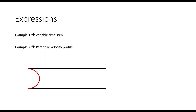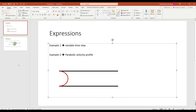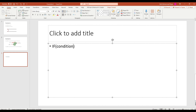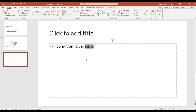Let's start with example one — the variable time step. It is a one-line expression and pretty straightforward. One important thing: in expressions we will use the IF condition a lot. The syntax is: IF( condition, true value, false value ). You define your condition in the brackets — if the condition is true, it uses the first value; if false, it uses the second value. That's the general syntax of the IF condition.